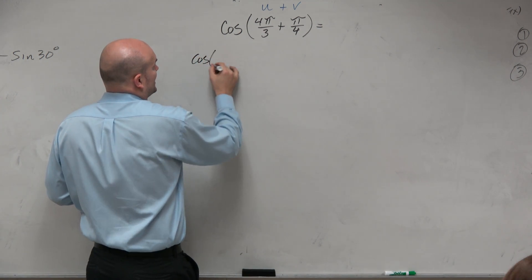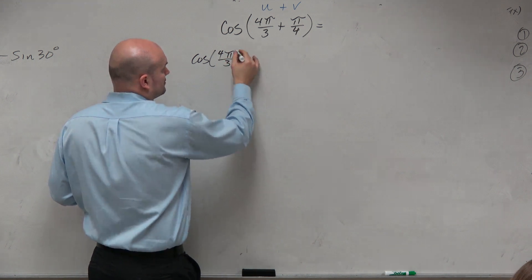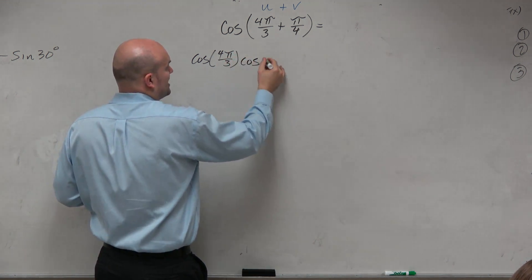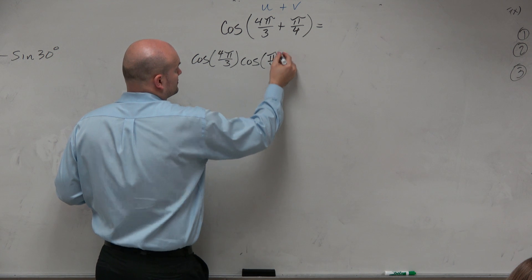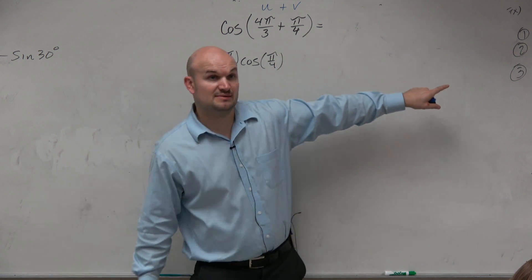So we can say cosine of 4π/3 times the cosine of π/4, right? Cosine of u times cosine of v.